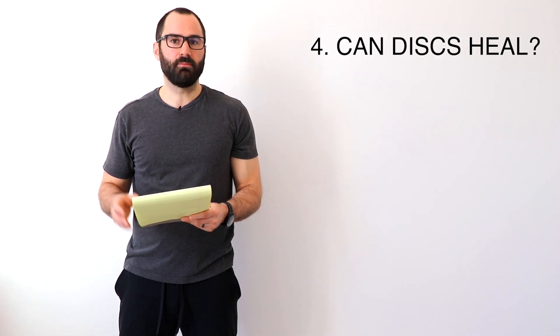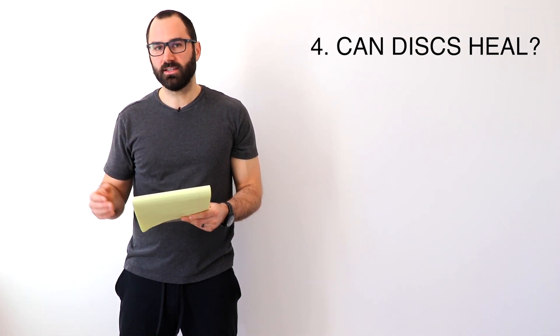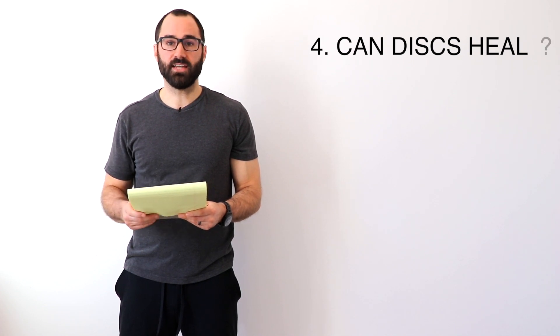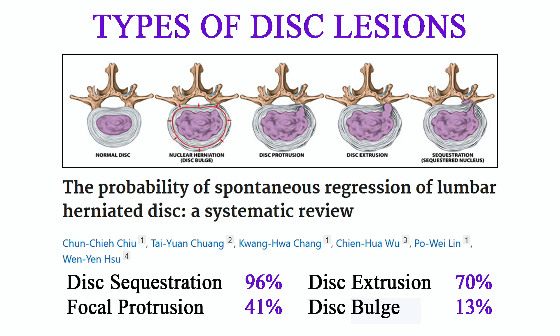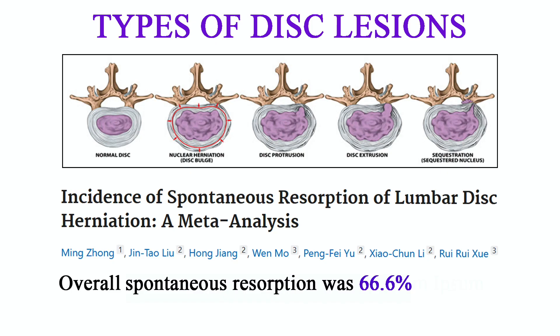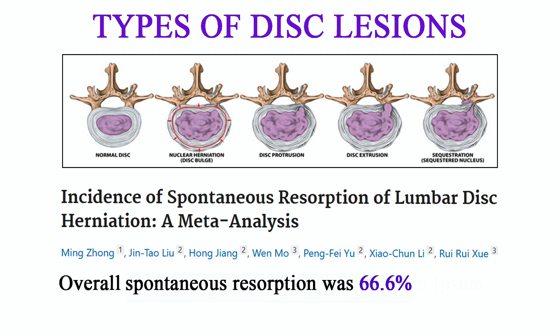Often when people hear about disc herniations, it can be very scary — something that appears they have to deal with forever. Luckily, there's a lot of strong evidence that discs can heal and adapt over time. The first study, Chew et al. in 2015, found that spontaneous remission happened in all kinds of disc bulges and herniations, and surprisingly the more severe the herniation was, the faster it healed. The theory is the more extreme the herniation, the more the body feels it's foreign, and the faster it heals. Secondly, the Zong et al. study in 2017 found the overall spontaneous remission of lumbar disc herniations to be 66%.